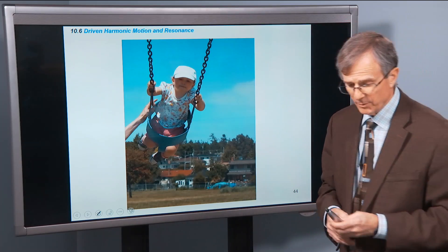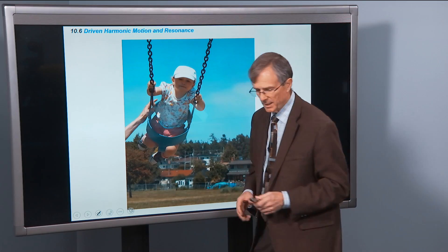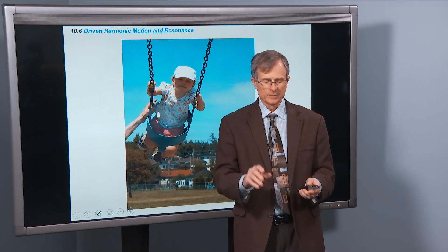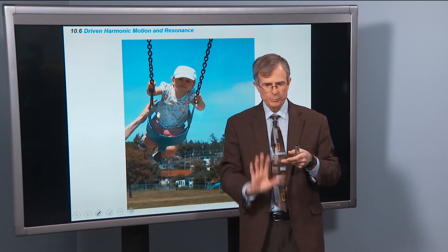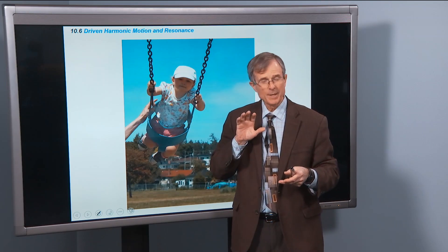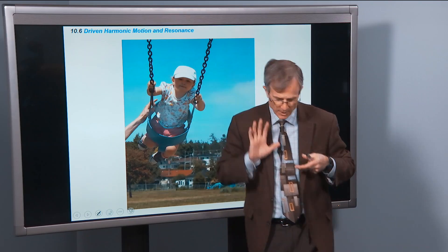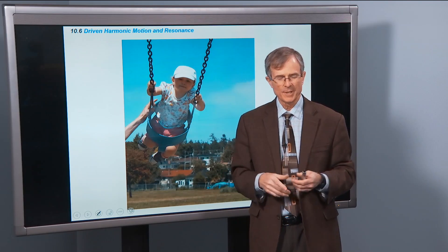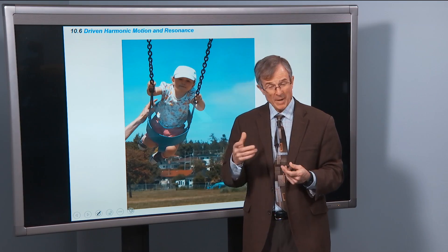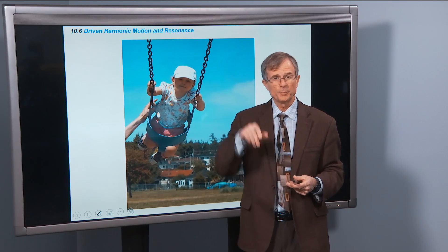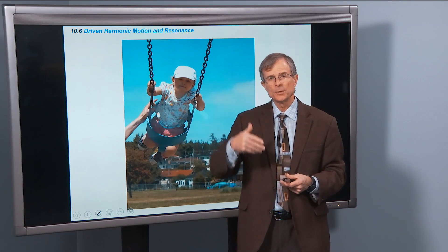Another example of resonance is pushing a child on a swing. You want to push the child as they go forward and come back — pushing every time they return so they go forward again. Your period of pushing matches the natural period of the pendulum, and so you can increase the amplitude of the motion. If you don't push at the right time, you're not going to increase the amplitude.